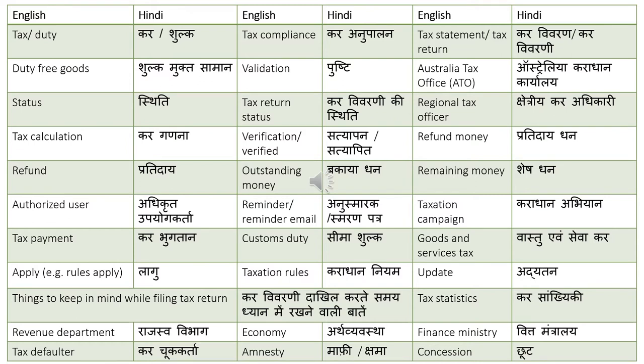Revenue department: 'rajasv vibhaag'. Revenue is translated as 'rajasv'. Tax defaulter: 'kar chuk karta' — it can also be translated as 'kar doshi', but 'kar chuk karta' is the better translation. Tax compliance: 'kar anupalan'.